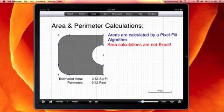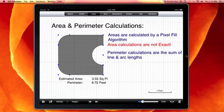Now, we do have to notice that this is going to be an estimate, and therefore the area calculations are not exact. Perimeter calculations, on the other hand, are the sum of the line lengths and line arcs, which we also know in GraphPad. And so, therefore, perimeter calculations are exact.